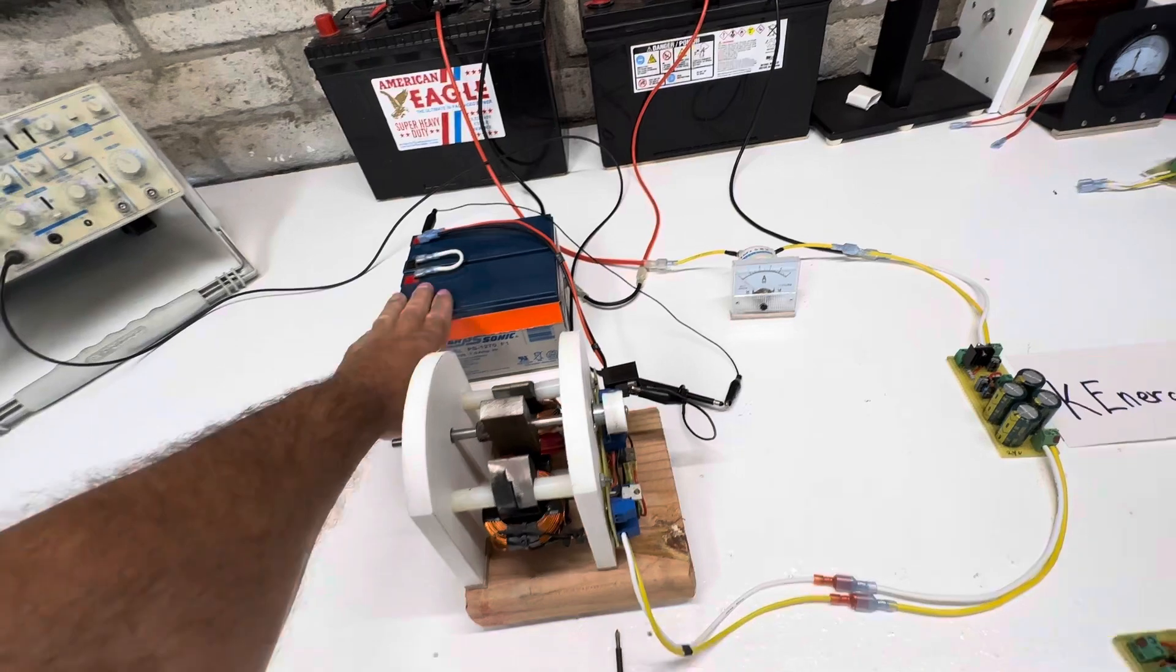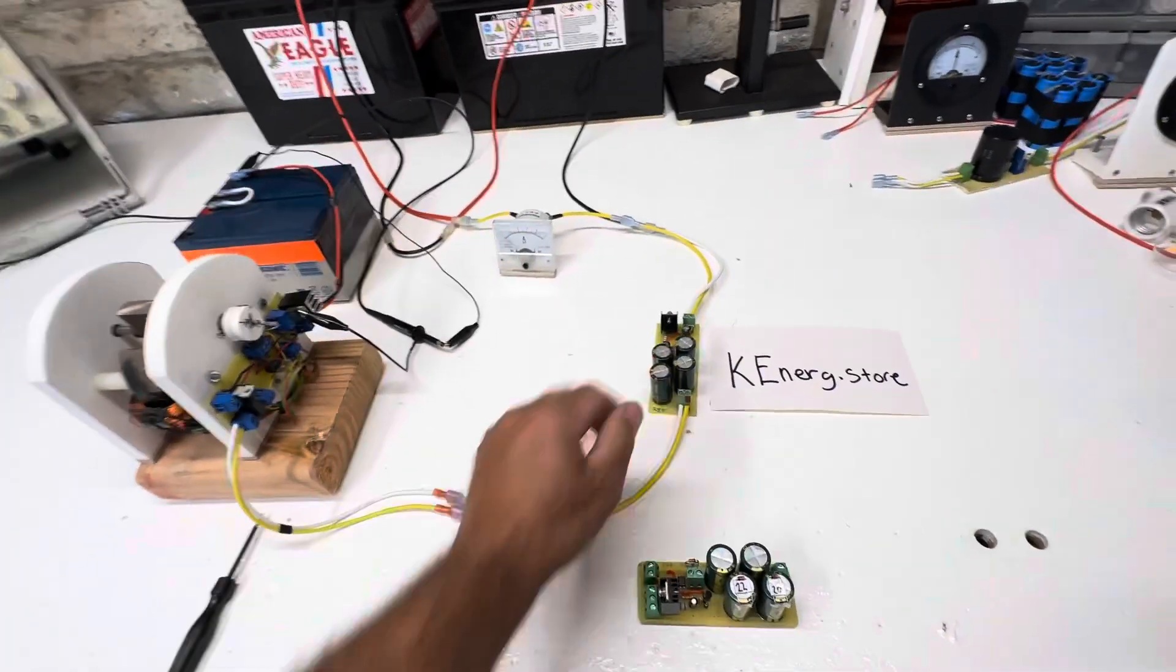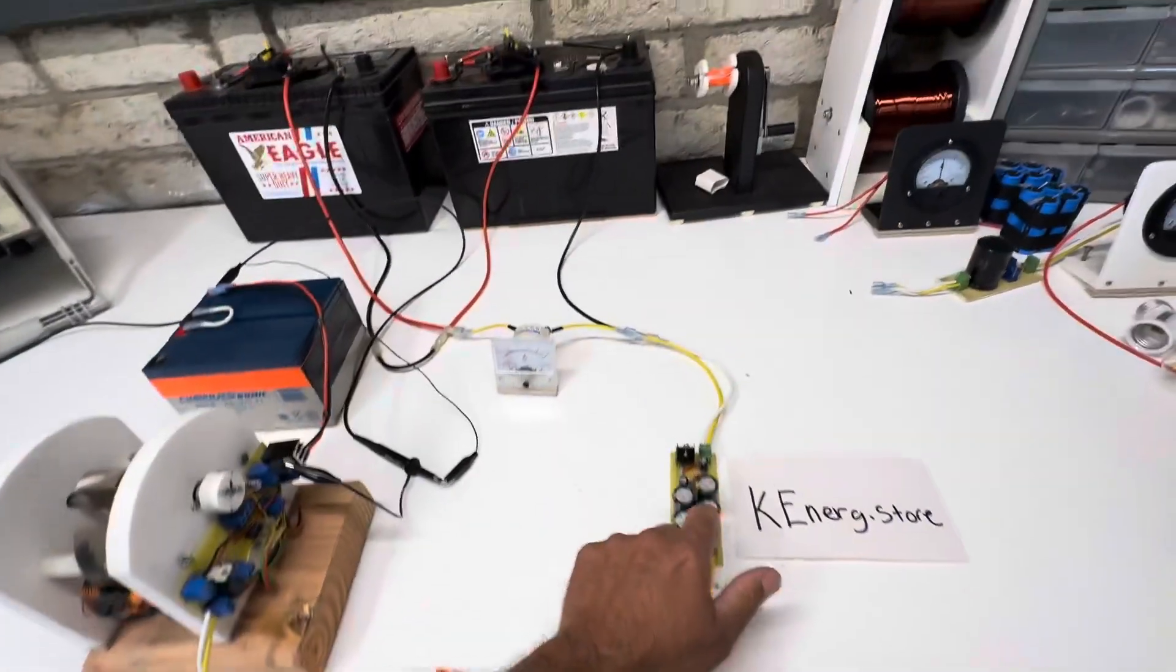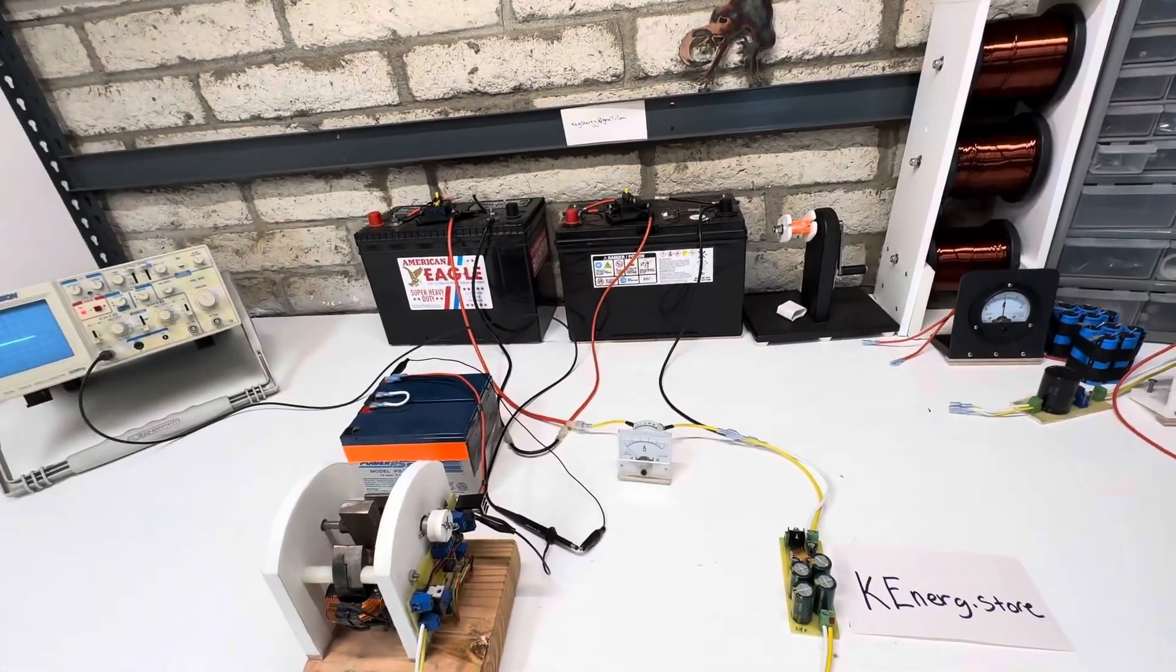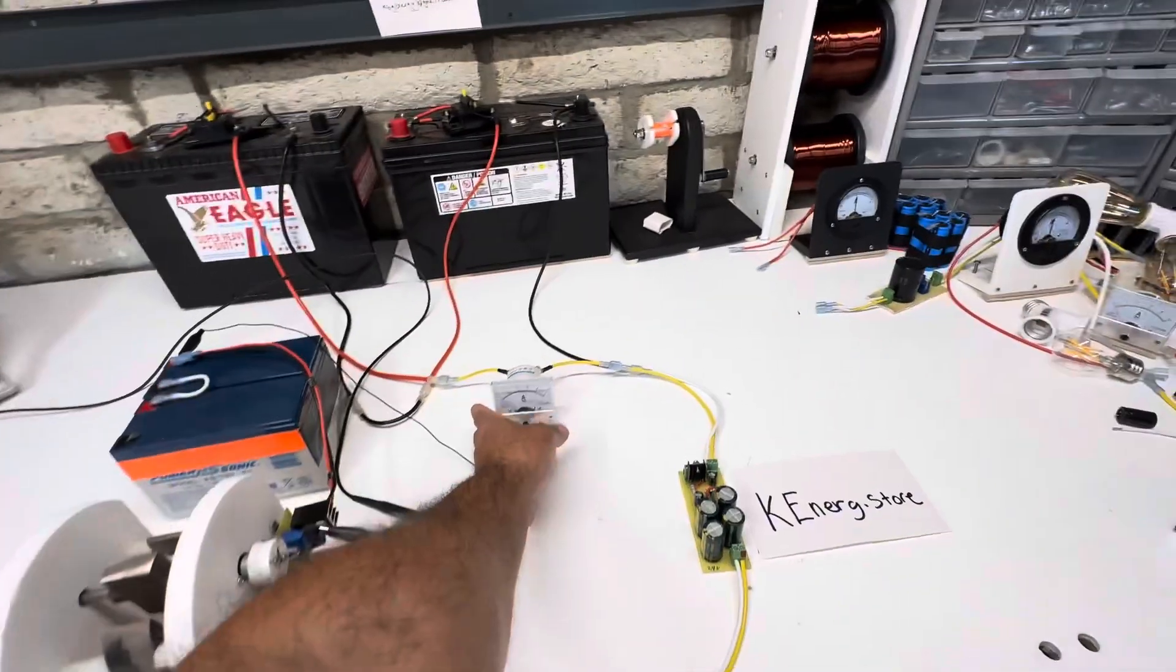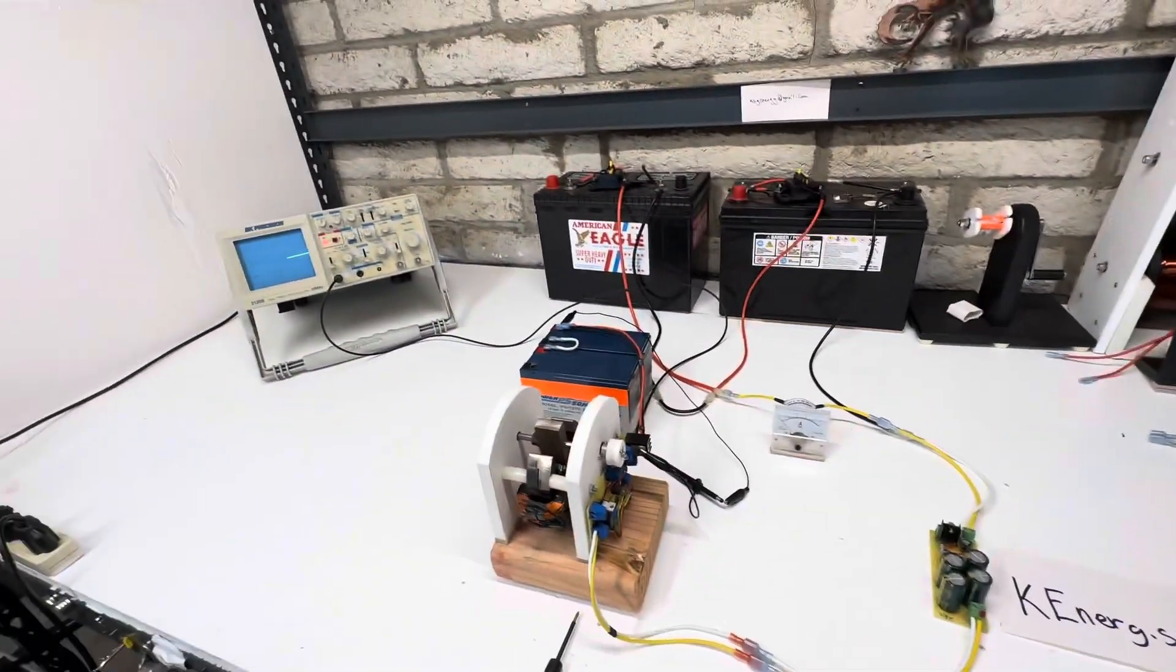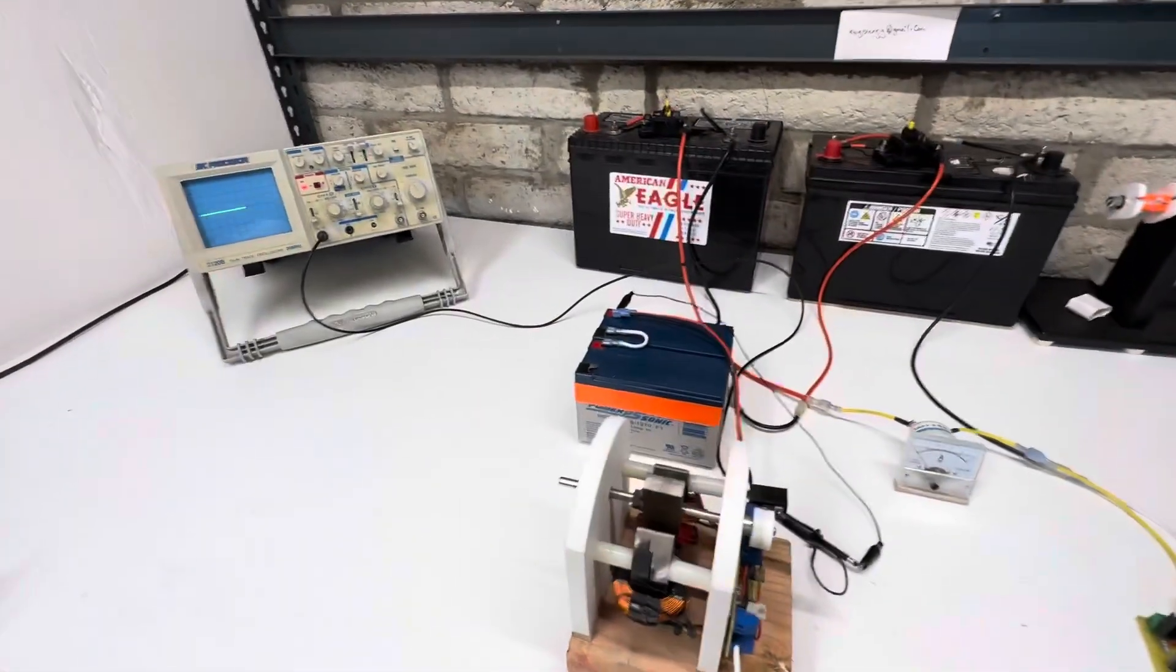And what we have here hooked up is 24 volts, because this is a 24 volt cap dump. And this one is going to be dumping its power into these other two batteries that are in series. And then you'll be able to see the input here. So what I want to talk about is what these cap dumps actually do.